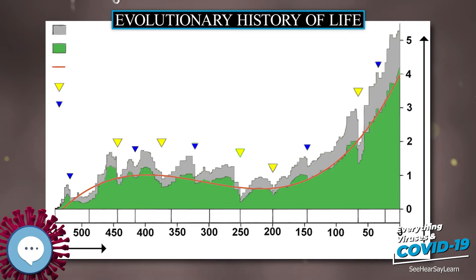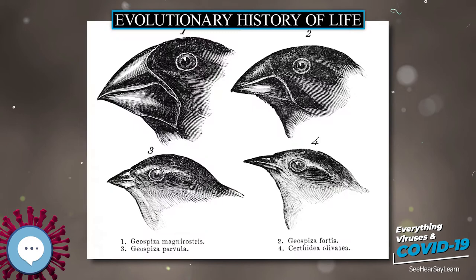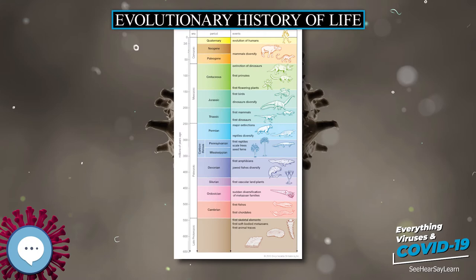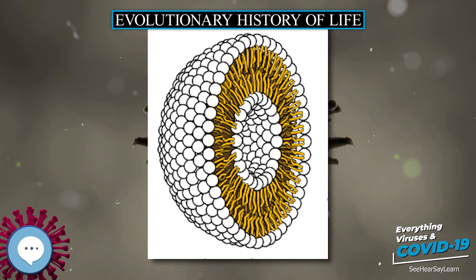Microbial mats of coexisting bacteria and archaea were the dominant form of life in the early Archean epoch, and many of the major steps in early evolution are thought to have taken place in this environment. The evolution of photosynthesis, around 3.5 Ga, eventually led to a buildup of its waste product, oxygen, in the atmosphere, leading to the Great Oxygenation Event, beginning around 2.4 Ga. The earliest evidence of eukaryotes, complex cells with organelles, dates from 1.85 Ga, and while they may have been present earlier, their diversification accelerated when they started using oxygen in their metabolism.